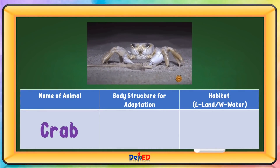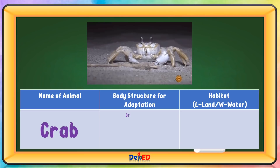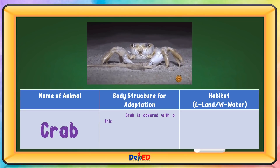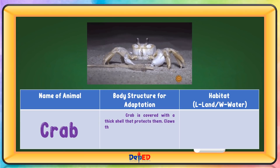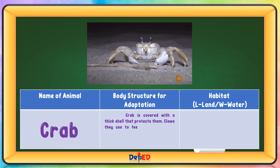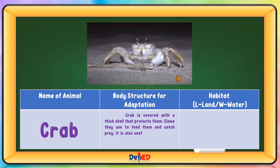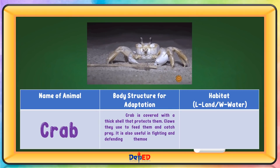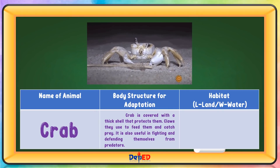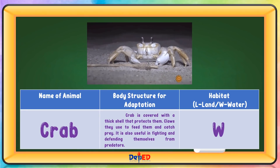Name of animal: Crab. Body structure for adaptation: Crab is covered with a thick shell that protects them. They use their claws to feed and catch prey; it is also useful in fighting and defending themselves from predators. Habitat: Water.